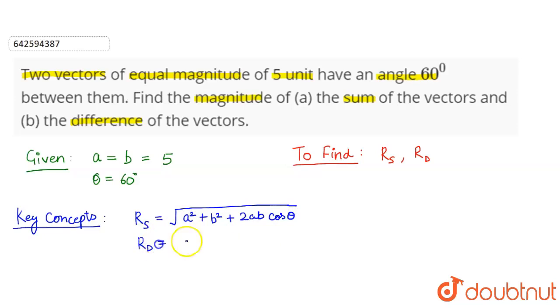And resultant for the difference of the two vectors is given as square root of A squared plus B squared minus 2AB cos theta.